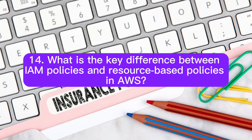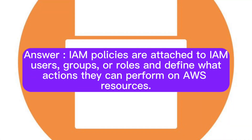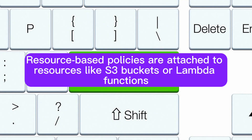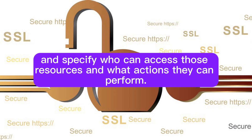Question 14: What is the key difference between IAM policies and resource-based policies in AWS? IAM policies are attached to IAM users, groups, or roles, and define what actions they can perform on AWS resources. Resource-based policies are attached to resources like S3 buckets or Lambda functions, and specify who can access those resources and what actions they can perform.